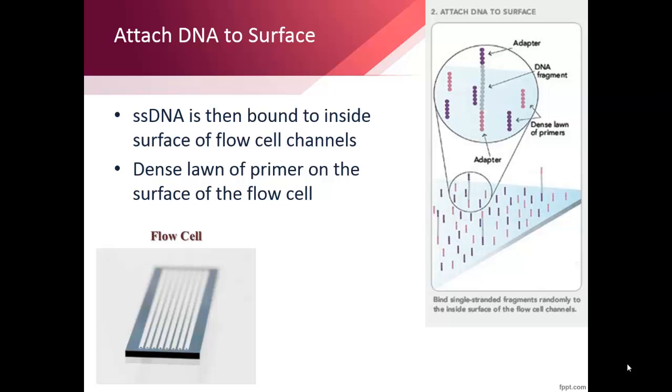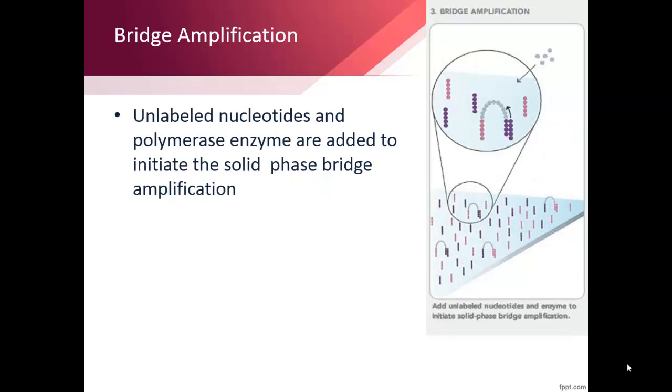Several samples can be loaded into one of the eight lanes of the flow cell for simultaneous analysis. In this step, the sequence makes a kind of bridge shape when it is being copied, and gives the method its namesake of bridge amplification.